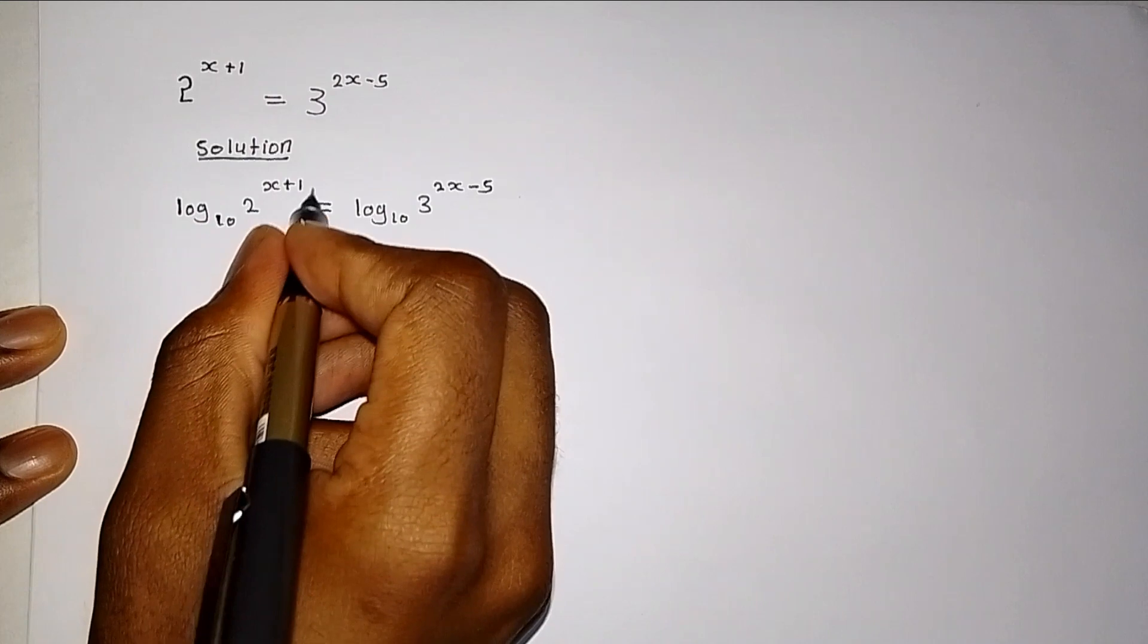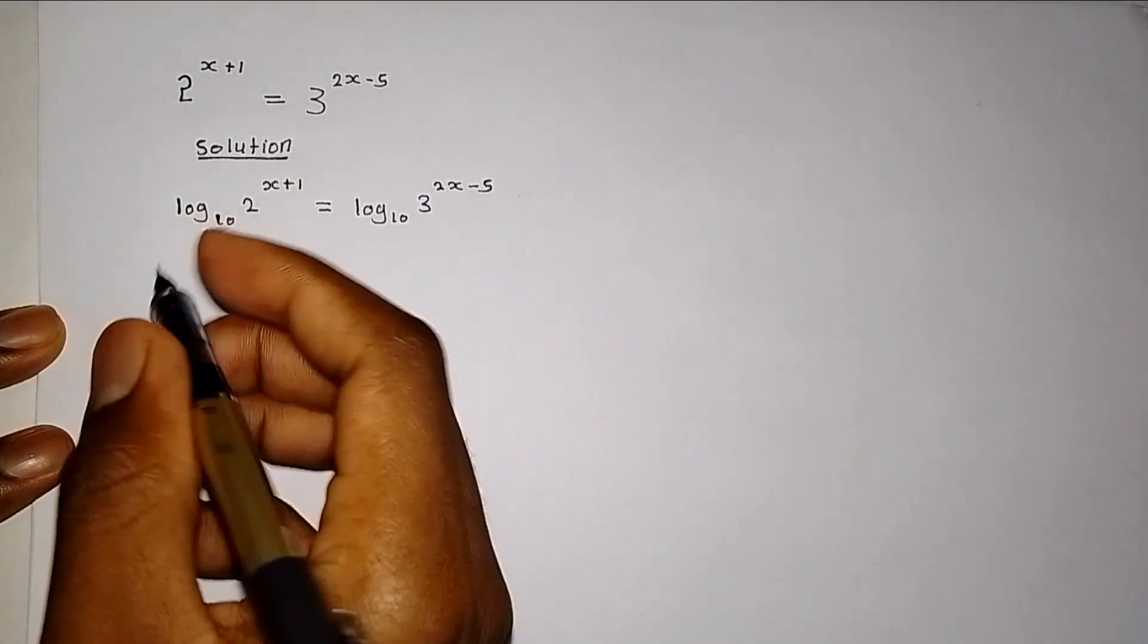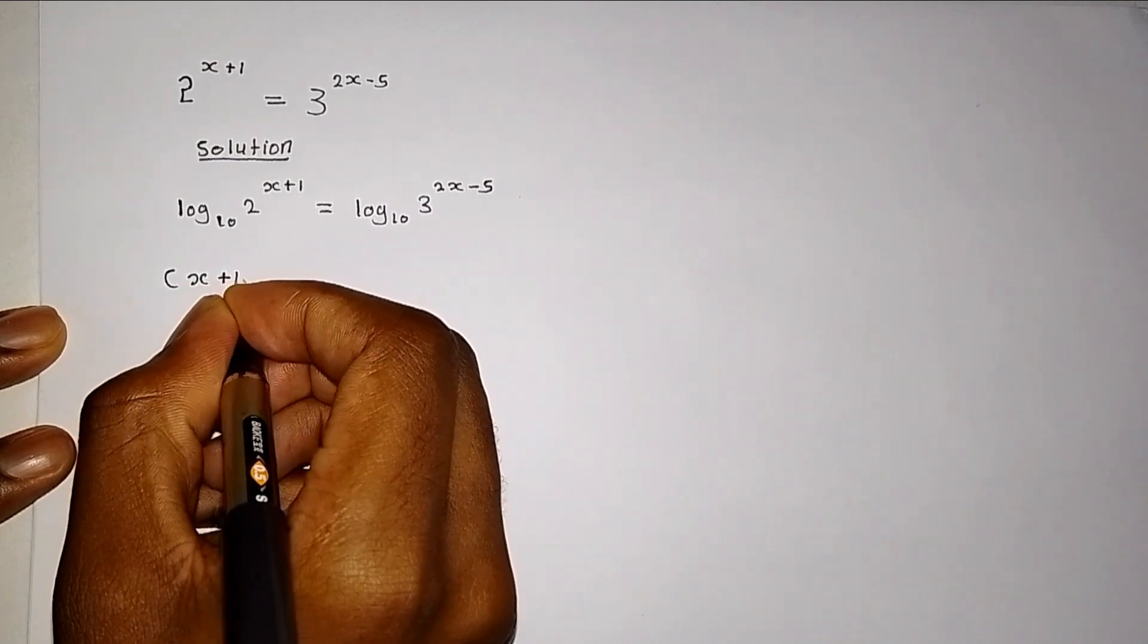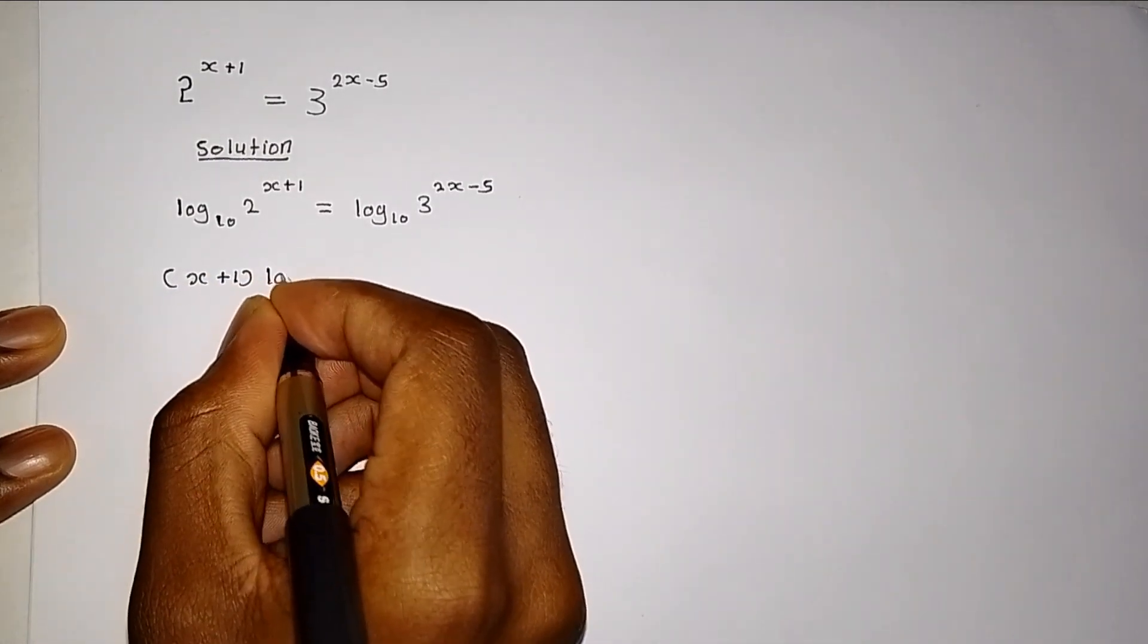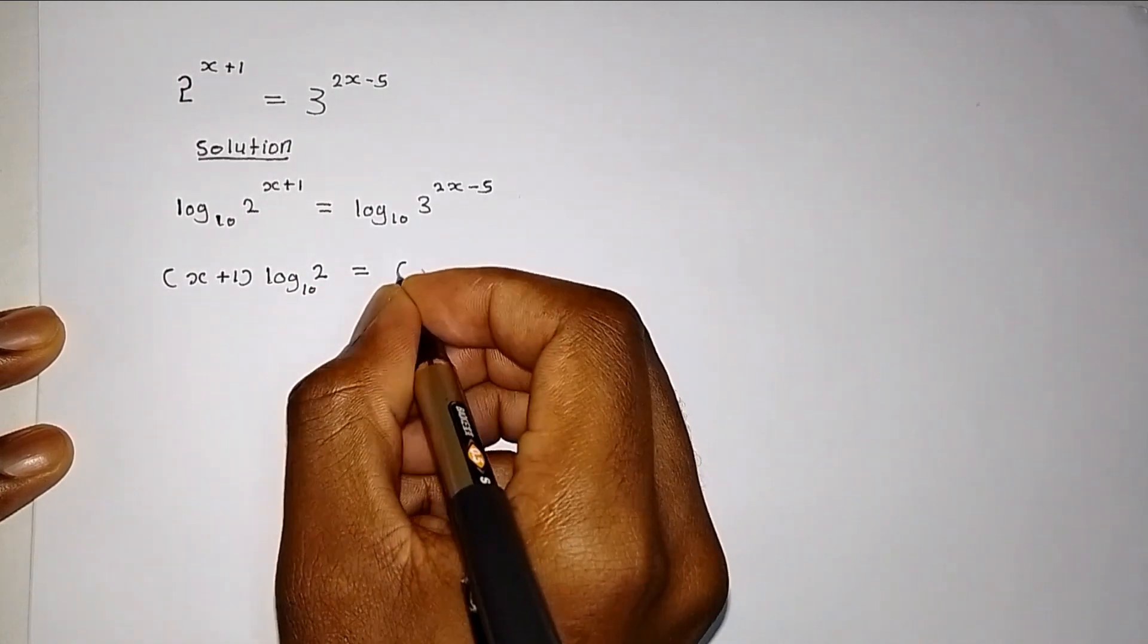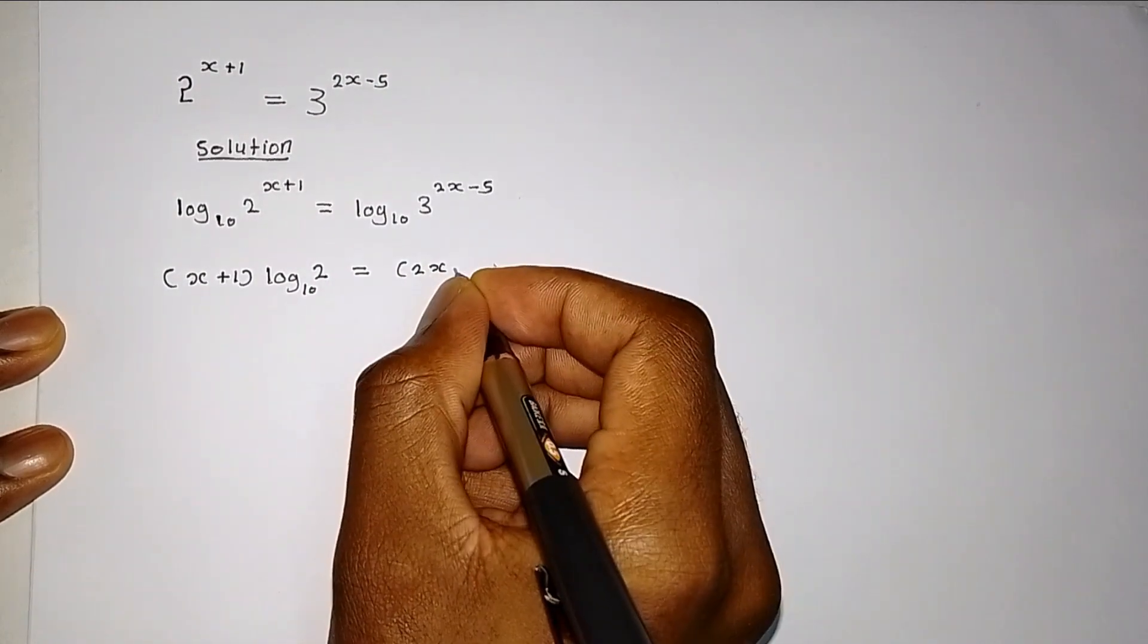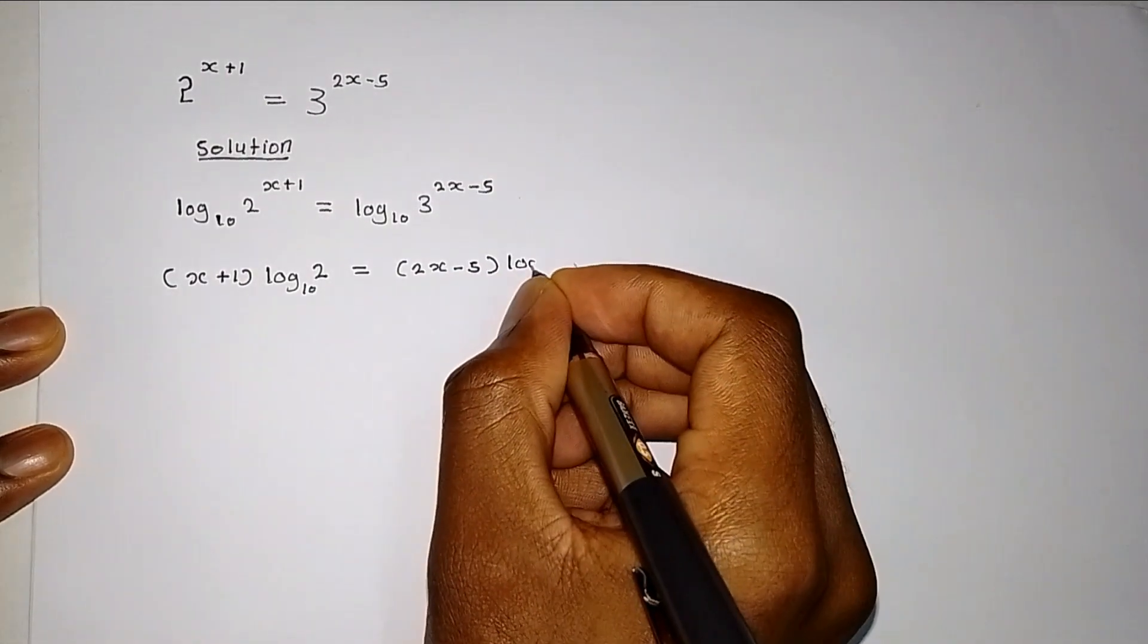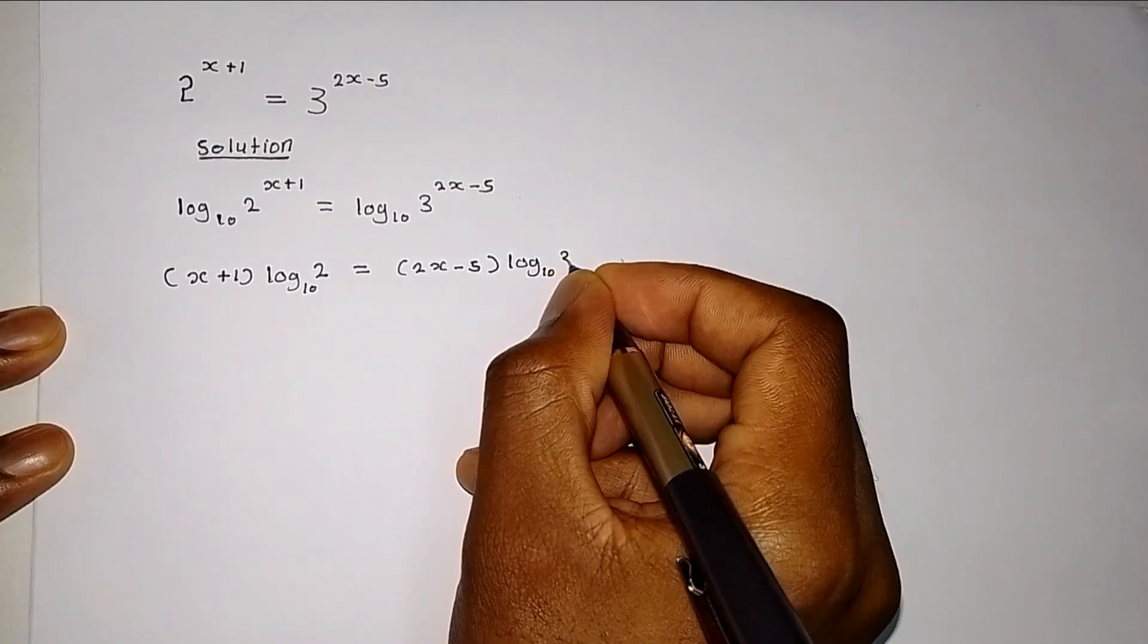Then we take the power and bring it on this side. This will be x plus 1 multiplied by the log of 2, which gives us 2x minus 5 multiplied by the log base 10 of 3.